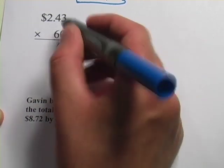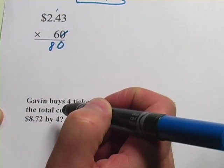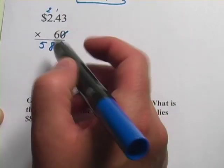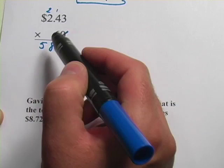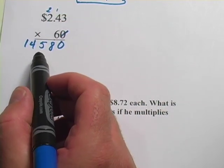Now it's 6 times 3 is 18. We've got to carry the 1 up here to add in later. 6 times 4 is 24. That's 25. We've got to carry the 2. And 6 times 2 is 12. We add in the 2. That's 13, 14. So I've got 1, 4, 5, 8, 0.